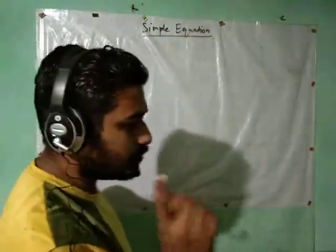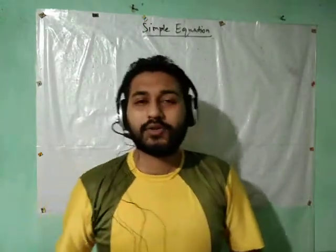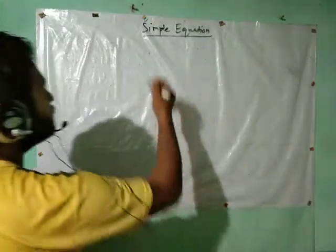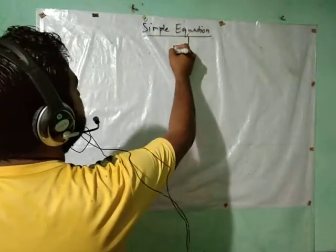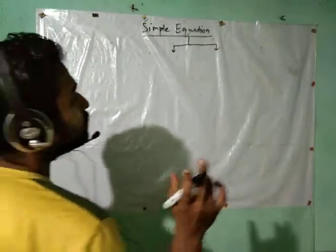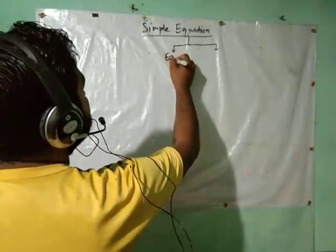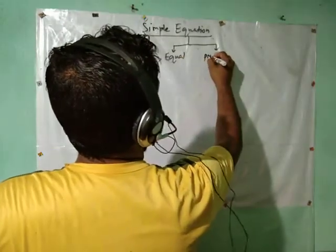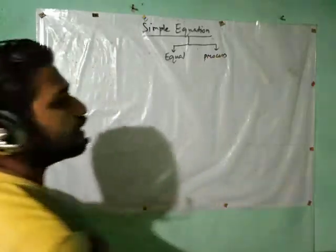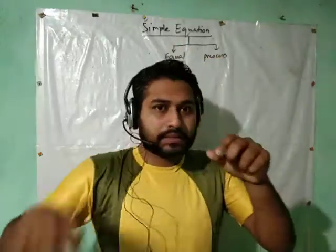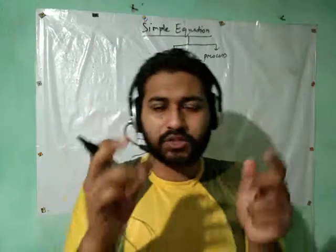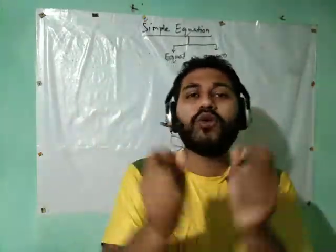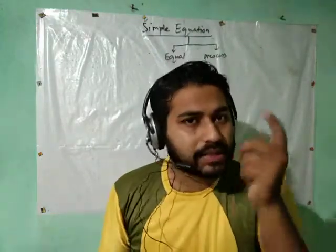Now, what about 'equation'? The most important thing we have to discuss here is equation. What do you mean by equation? This word 'equation' is formed from two words: one is 'equal', and the other is the process of making it equal. So equation means the process of making equal — but that is not the exact meaning. I am going to make you understand what equation actually is.